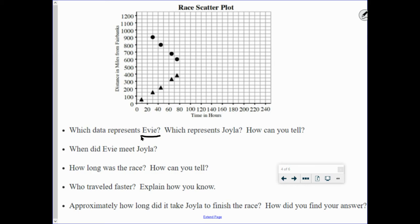And then which one represents Joila? The other whatever, the circle or the triangles represent Joila because blah, blah, blah. How do you know? How are you figuring this out?